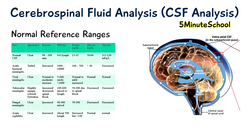Here are the normal reference ranges for cerebrospinal fluid. If the cerebrospinal fluid pressure is higher than the reference range, this may be due to increased intracranial pressure, or pressure within the skull. If it's decreased, the pressure may be reduced due to some kind of spinal block, dehydration, or leakage of cerebrospinal fluid.